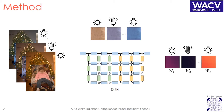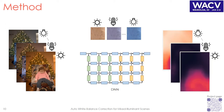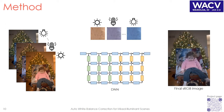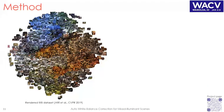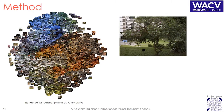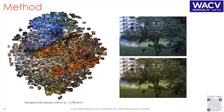We apply our network to compute the weights for each image, then combine the images to produce the final output. To train our network, we use the rendered white balance dataset that includes over 60,000 single-illuminant images. Each image was rendered from a raw image to sRGB with different white balance settings, and each image is associated with a ground truth image with properly white-balanced colors.